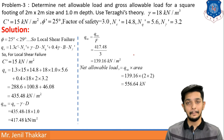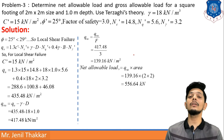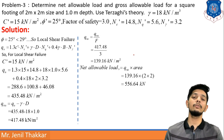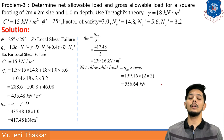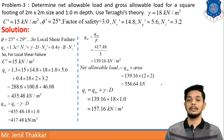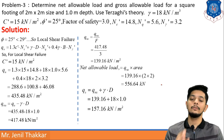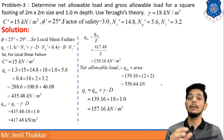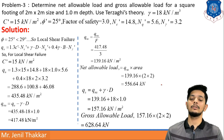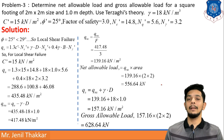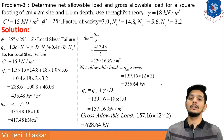Net allowable load = q_ns × Area = 139.16 × (2×2) = 556.64 kN. For gross allowable bearing capacity: qs = q_ns + γ·D = 139.16 + 18×1 = 157.16 kN/m². Gross allowable load = 157.16 × 4 = 628.64 kN. That concludes this chapter; we will meet in the next video with a new chapter.